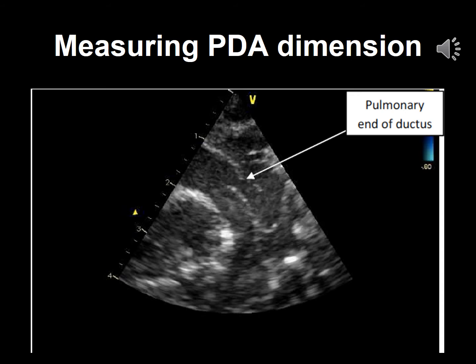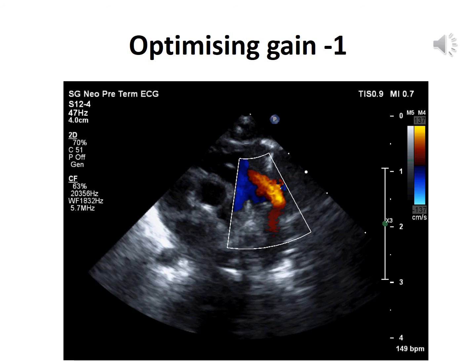The arrow points towards the pulmonary end of the ductus, where the ductus should normally be measured unless there is a constriction away from the pulmonary end. It is very important to optimize gain before measuring the PDA dimension. This involves increasing the scale so you can see the duct flow on color flow Doppler, then increasing the color gain until there is bleeding or spilling of speckles into the surrounding tissue, and then reducing the gain so the duct is seen as a clean flow pattern used for measurement.